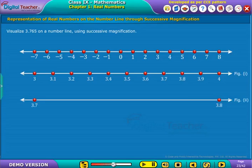Let us now divide this portion into 10 equal parts and represent them as 3.71, 3.72, and so on to 3.8 as shown in figure 2. As before,